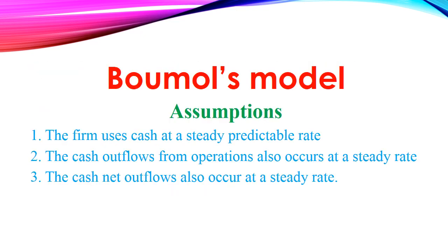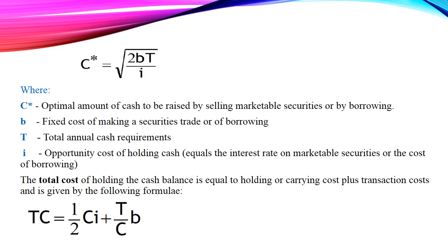The Baumol model is based on three assumptions. First, the firm uses cash at a steady, predictable rate. Second, the cash outflows from operations also occur at a steady rate. Third, the net cash outflows also occur at a steady rate.